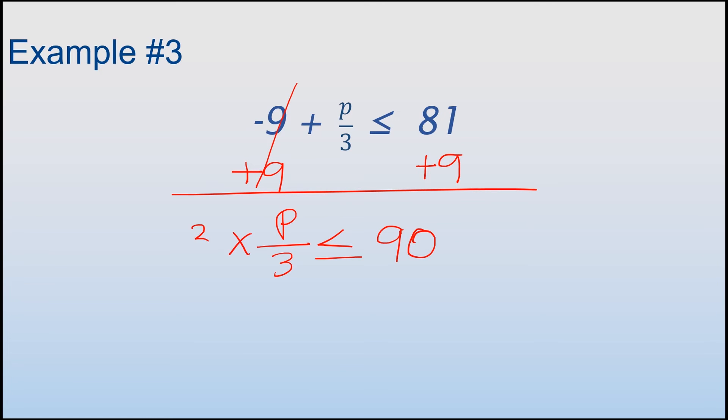Multiply both sides by 3, since right now this side is divided by 3. This cancels this out. I'm left with a p here is less than or equal to 270. Again, you would follow the same process to check your answer. I'm not going to check it this time, because you're probably getting the hang of it. Let's move on to example number 4.